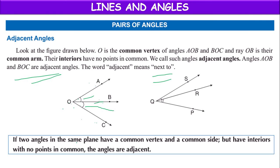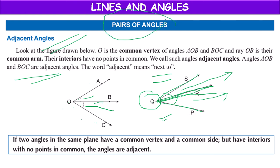Similarly, angles SQR and RQP are adjacent angles — Q is the common vertex, QR is the common arm, and their interiors don't have any common point. So adjacent angles are a pair of angles with a common vertex and common side, but with interiors having no points in common.